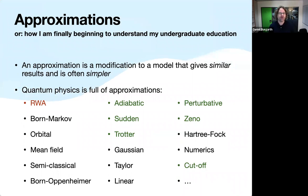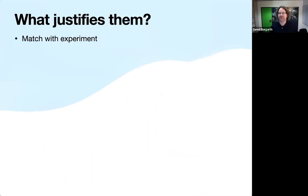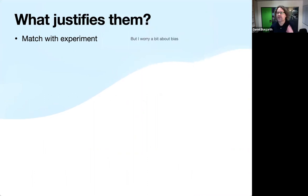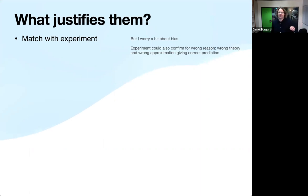What justifies an approximation? I think a reasonable answer is the match with experiment, because we are physicists and ultimately the goal is to describe what we can observe. However, I worry a little about bias — maybe some observations are not necessarily published. And I want to argue that an experiment could confirm for the wrong reason: you might have the wrong theory, apply the wrong approximation, and still get a correct prediction.